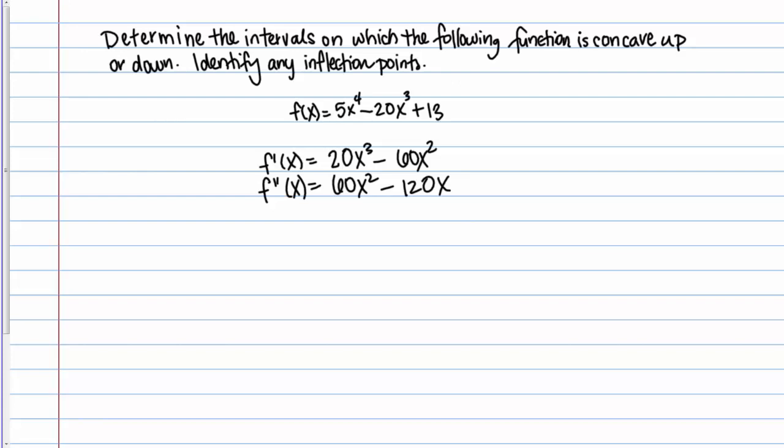What we want to do is find the places where the second derivative either equals 0 or does not exist. These are going to be the only possible places where the concavity would change. It's like the critical points except we're finding them for the second derivative instead of the first.